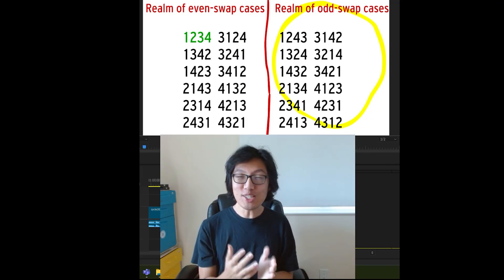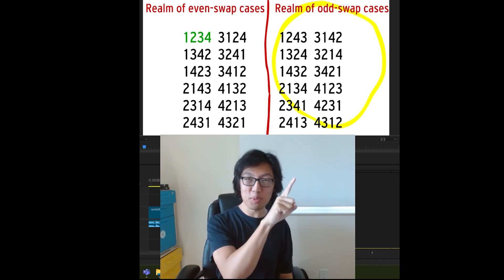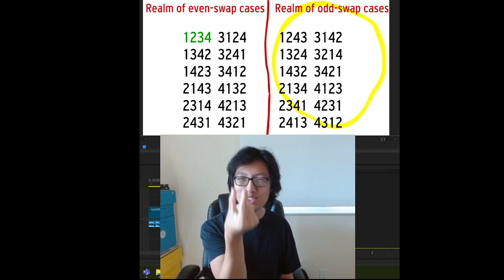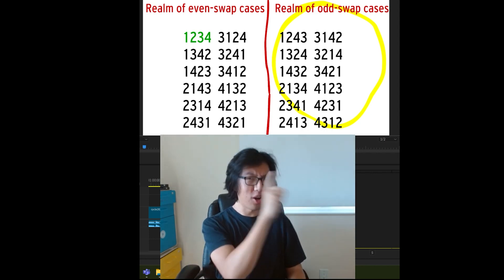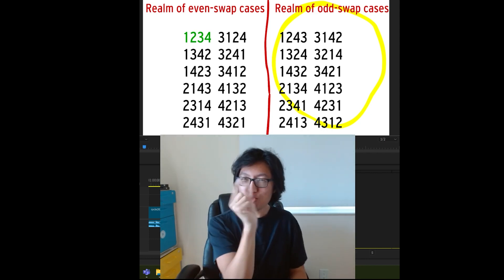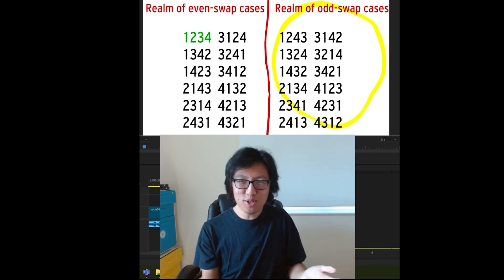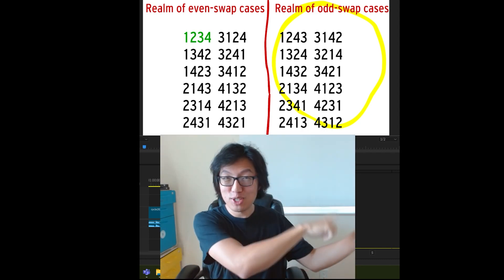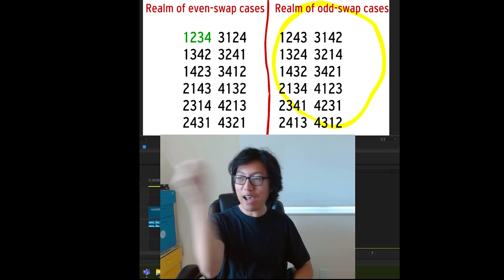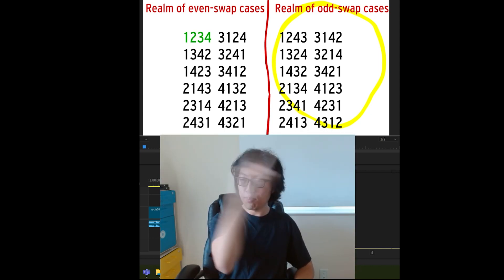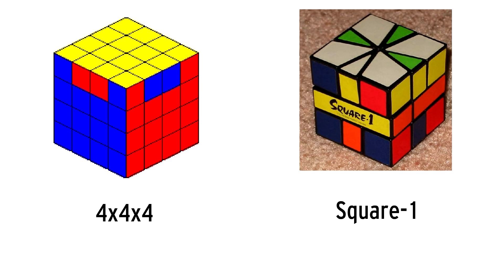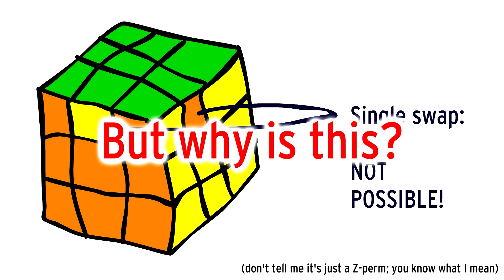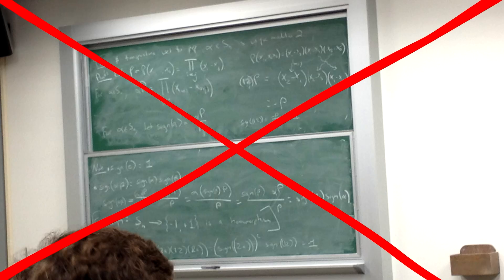Future Carrie here. Here's an easier way to understand even and odd permutations. Every time you swap any two elements, you'll always alternate between being in an even permutation and an odd permutation. You can never swap two elements and stay on the same side of this line. So it follows that when you do a pair of swaps, you'll always stay on the same side after the pair. Any speedcuber will know this by heart — understanding 4x4 and Square One parity problems relies on this fundamental fact. You can never do a single swap. But why is this? Can we explain it without complex equations? Definitely.